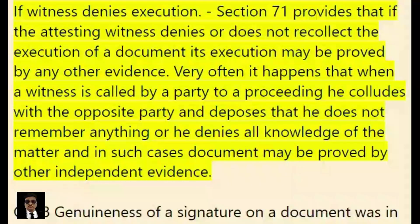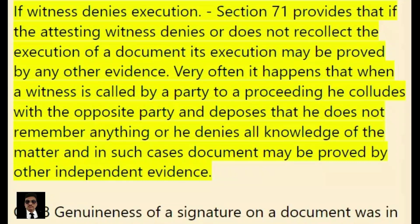Where the witness denies execution, Section 71 provides that if the attesting witness denies or does not recollect the execution of a document, its execution may be proved by any other evidence. Very often it happens that when a witness is called by a party to a proceeding, he colludes with the opposite party and deposes that he does not remember anything, or he denies all knowledge of the matter, and in such cases the document may be proved by other independent evidence.